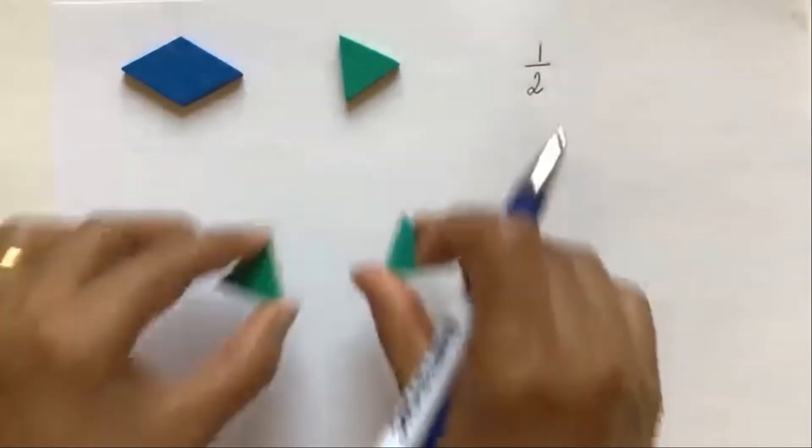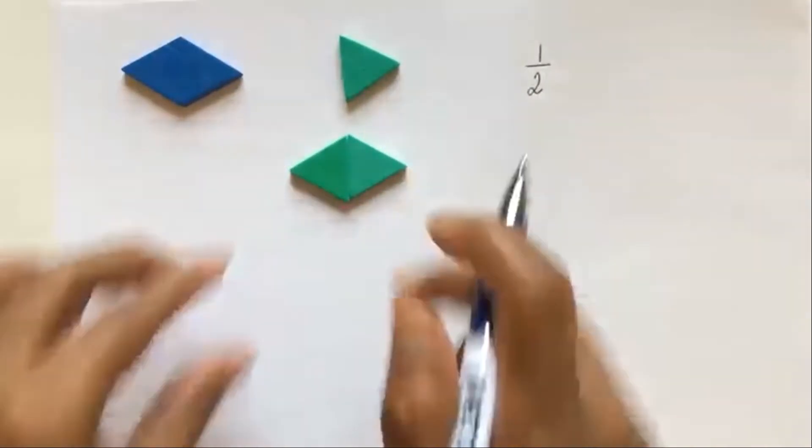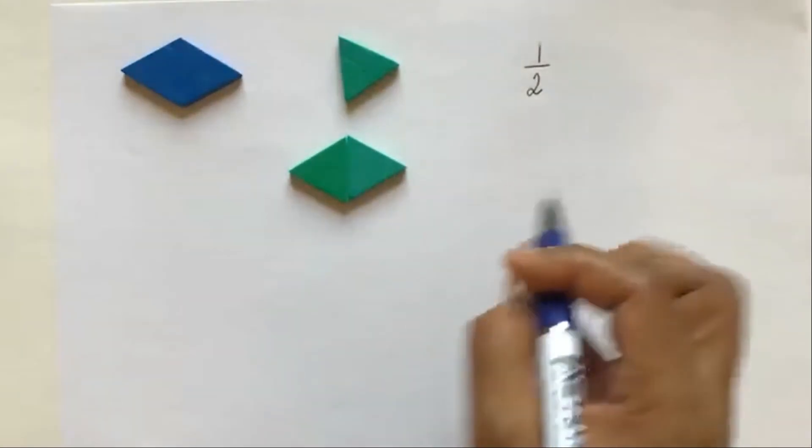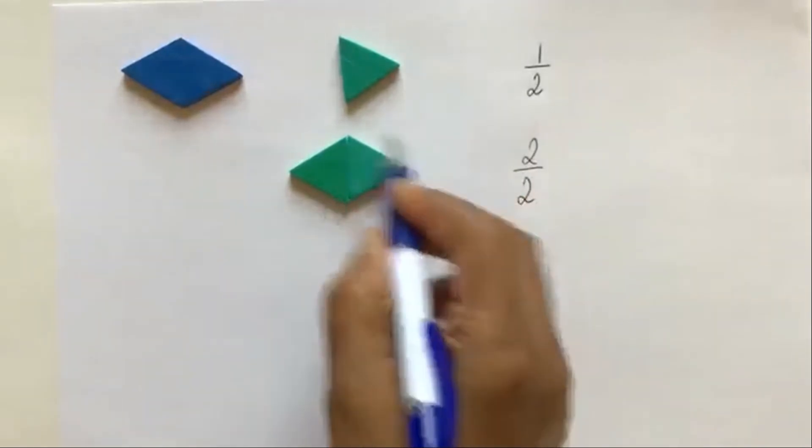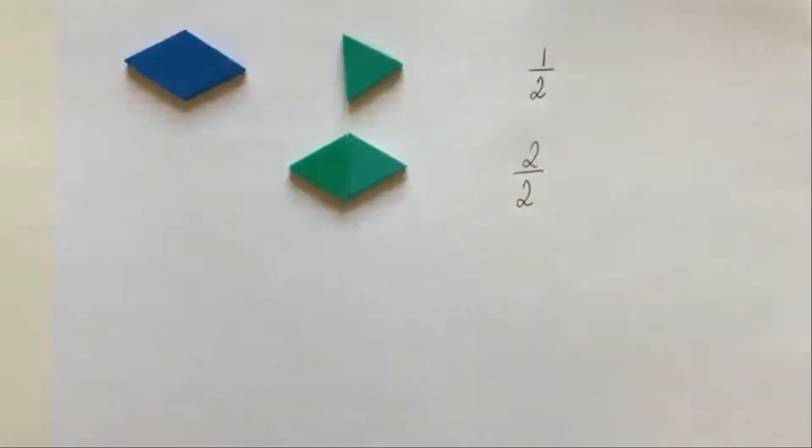Let me bring in another triangle. As you can see, that's one half, two halves. And two halves is the same as one.